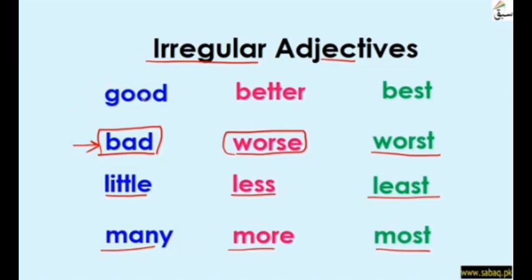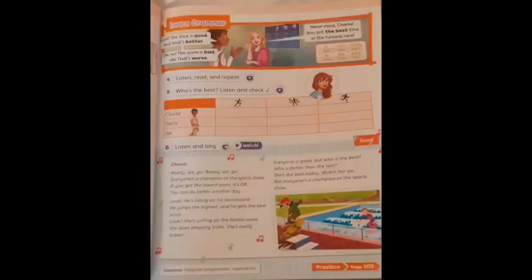So our irregular adjectives are: 'good,' 'bad,' 'little,' and 'many.' The comparatives are: better, worse, less, more. The superlatives are: best, worst, least, most. Better, worse, less, and more are comparatives, while best, worst, least, and most are superlatives.